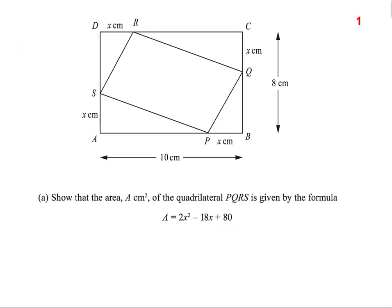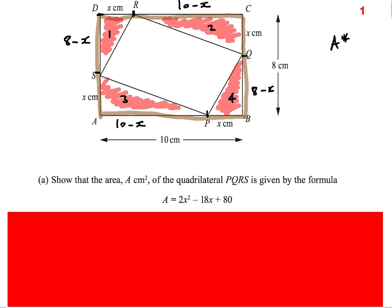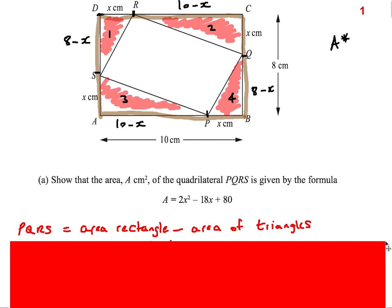Here's the first question — quite a tough one. The first part is definitely A-star level, which says: show that the area A of the quadrilateral PQRS is given by A = 2x² - 18x + 80. Whenever you get this kind of question, try to sketch or colour in the diagram to show yourself what's happening. I know the big area of this rectangle is 8 times 10, and if I take away the area of these four red triangles, what's left is PQRS. There might be a method mark just for showing the examiner you know what to do.